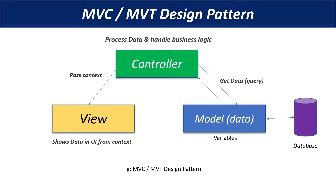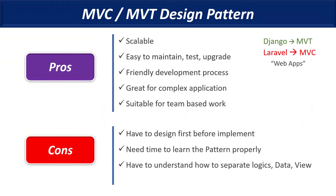The controller has the ability to control what information it gets from the model, analyze it, apply business logic to it, and send it to the view. All those things combined make the MVC pattern really good for web applications. It's amazing for building complex applications where a modular system is beneficial, especially when you're working in a team. The best example is that Django uses the MVT pattern, which is almost the same as the MVC pattern that Laravel uses.